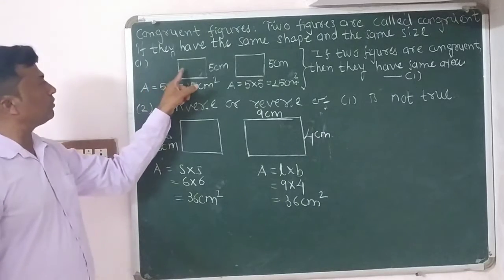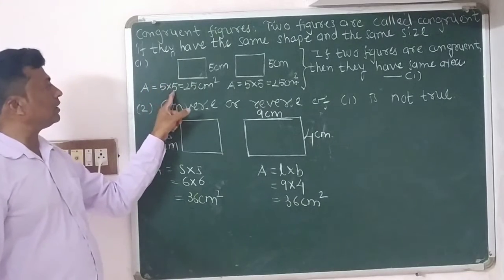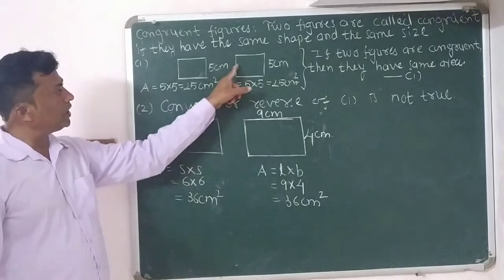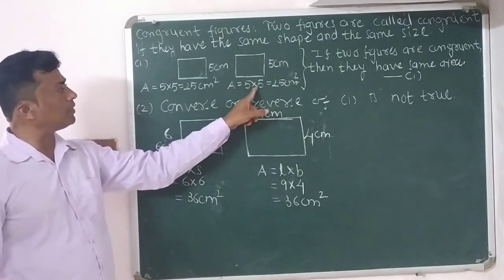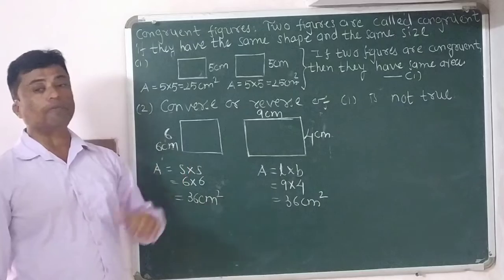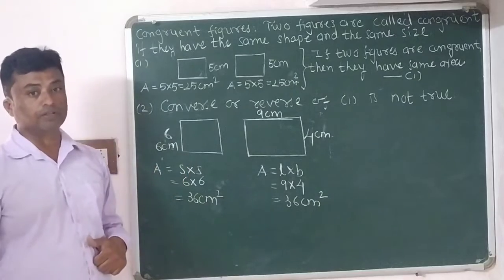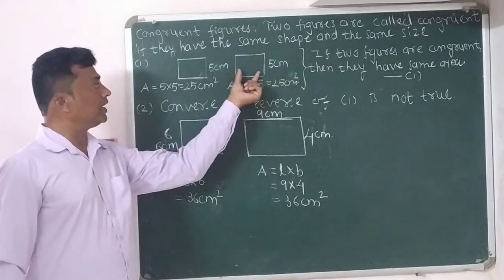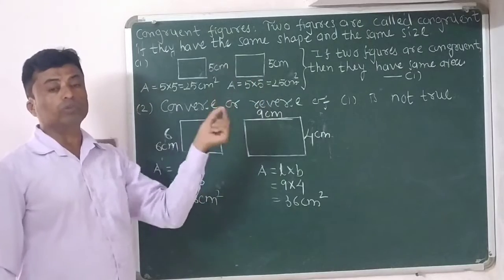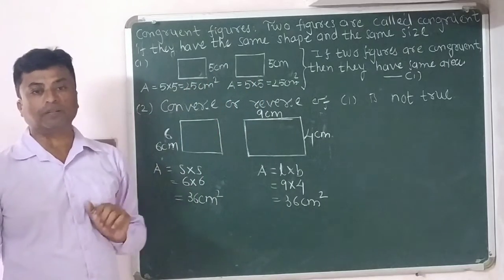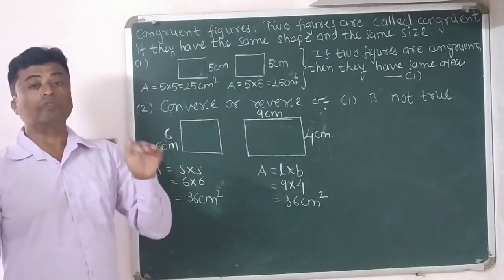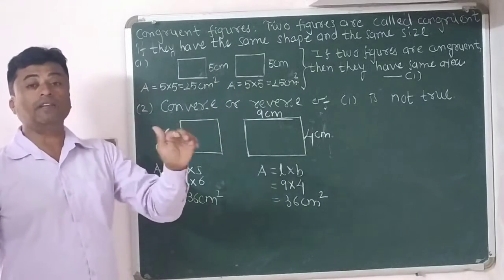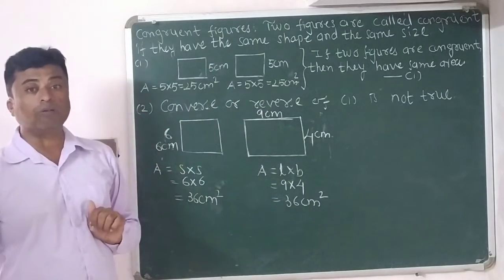Area of square one: 5 multiplied by 5 equals 25 centimeter square. Area of square two: 5 multiplied by 5 is equal to 25 centimeter square. Both squares have the same side length of 5 centimeters, so we can say that both squares are congruent figures and they have the same area.